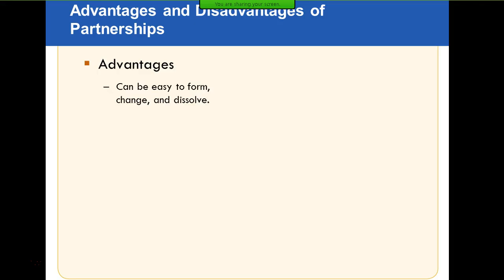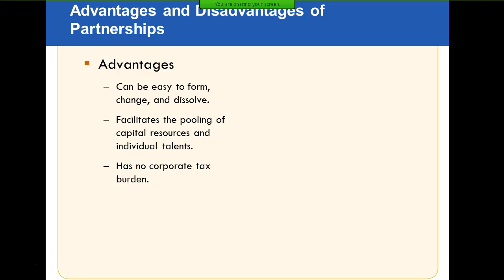The benefits and disadvantages of partnerships: they're easy to form, easy to change, and easy to end. They're better than a sole proprietorship in that two people have double the capital and knowledge. The partnership tax implications flow back to the individual partners at their own tax rates — there are no corporate income taxes for a partnership.